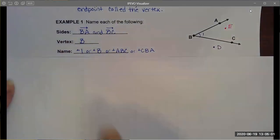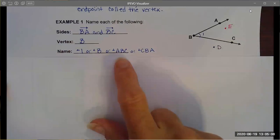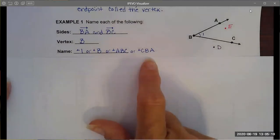The vertex in this case is B and we can name this angle a lot of different ways. I could name this angle based on its vertex, I could put a number inside there and call it angle one, I can label the angle based on the three points that comprise that angle knowing that the vertex always has to be in the center.